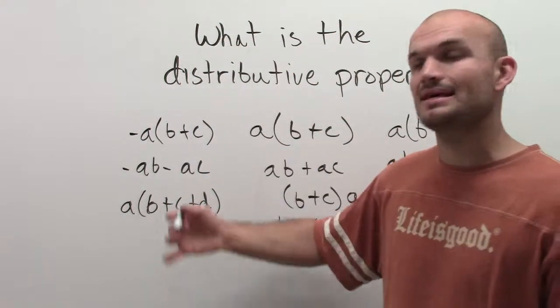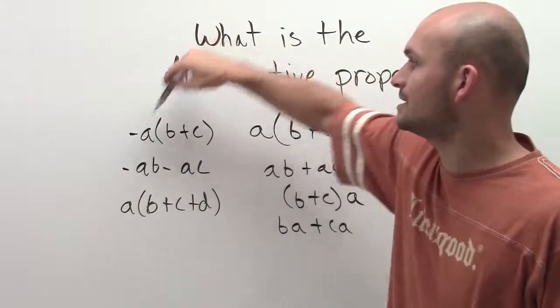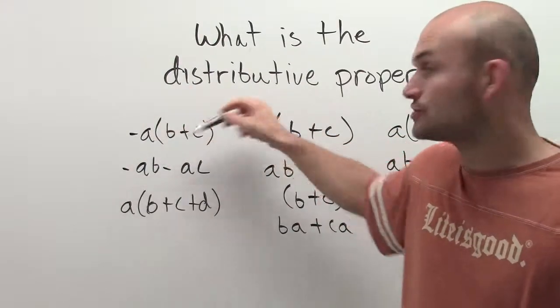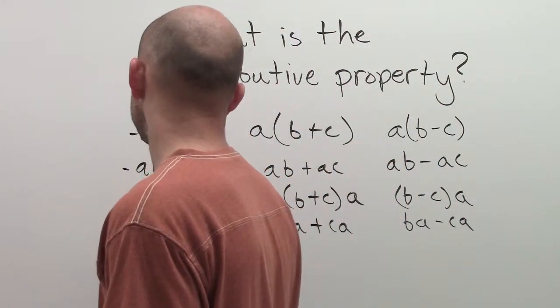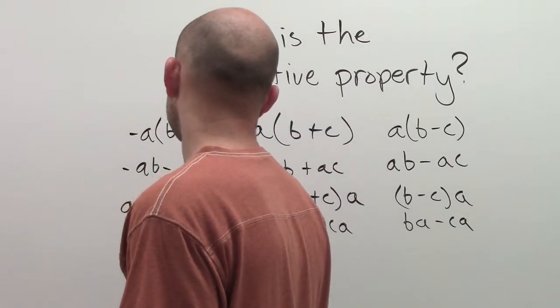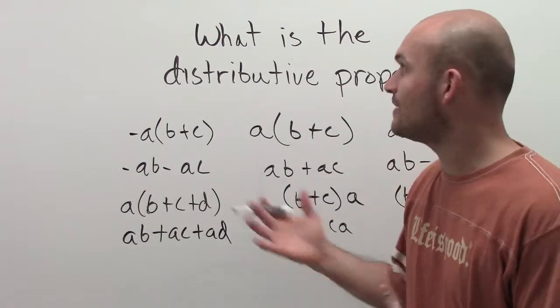It's the same thing. The distributive property states when you're multiplying, you distribute that to multiplying it to every single term inside the parentheses. So therefore, in this final one, I'm going to have a times b plus a times c plus a times d. And that's going to be the final position.